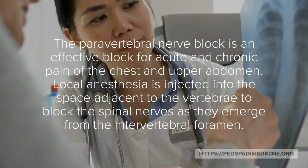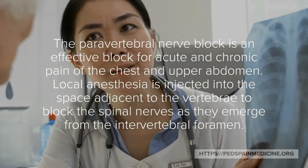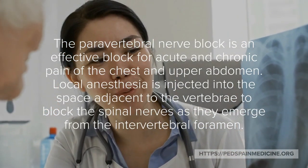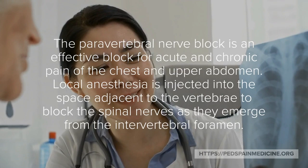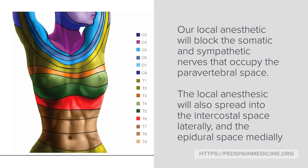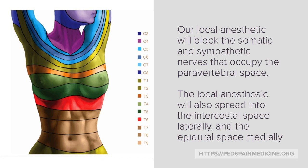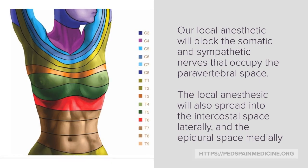The paravertebral nerve block is an effective block for acute and chronic pain of the chest and upper abdomen. Local anesthetic is injected into the space adjacent to the vertebra to block the spinal nerves, blocking both the somatic and sympathetic nerves that occupy the paravertebral space. The local anesthetic will also spread to the intercostal space laterally and the epidural space medially.